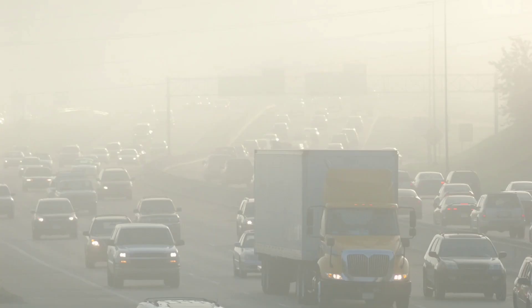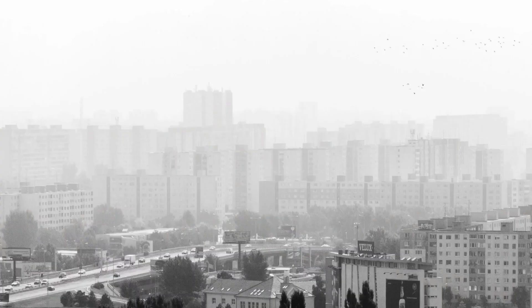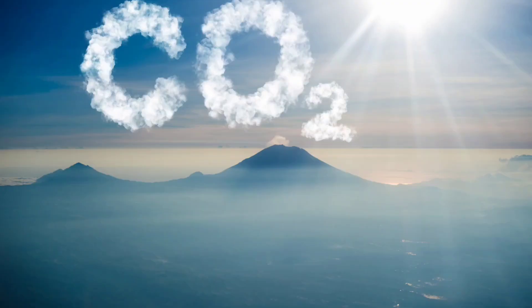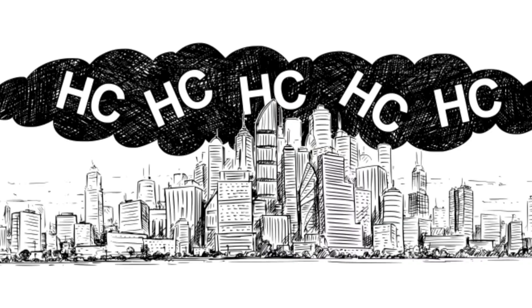Smog can reduce crop yields and damage forests. It can also kill fish and other aquatic life. Smog is a global problem. It affects cities all over the world, regardless of income level. Some of the most polluted cities in the world include Beijing,